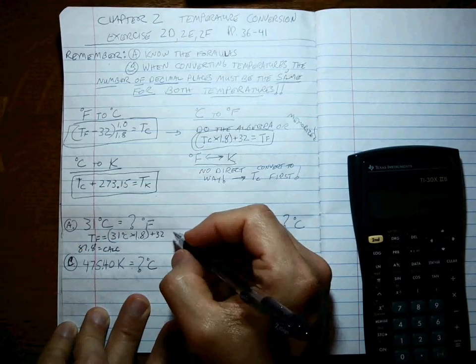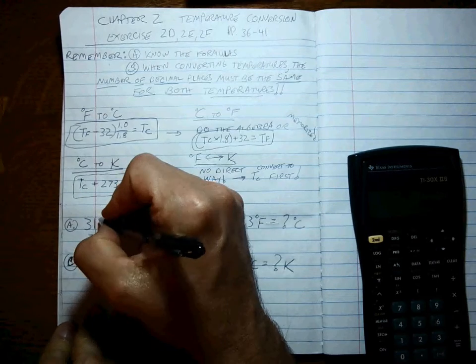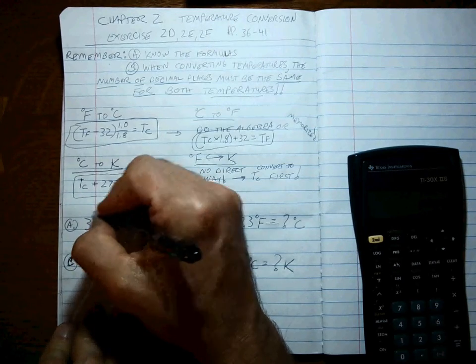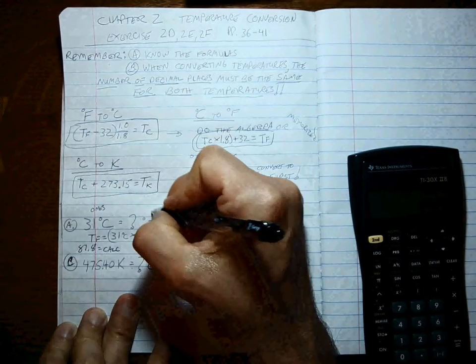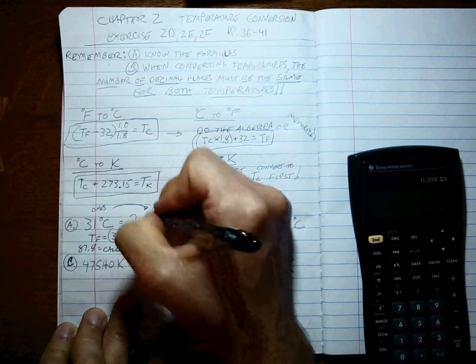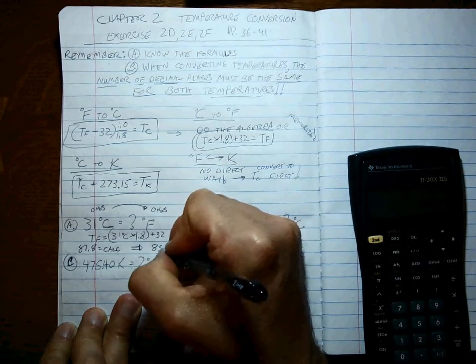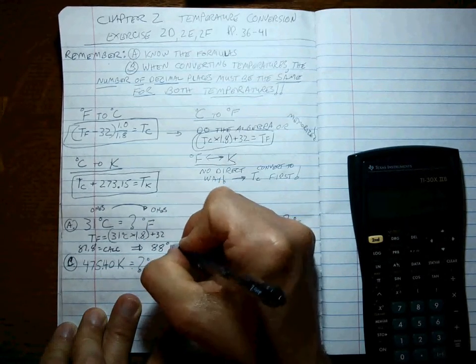What are you going to write? Well, what you're going to write is because this is known to no places past the decimal point or to the ones place, this answer is going to be to the ones place as well. So the correct answer here is 88 degrees Fahrenheit.